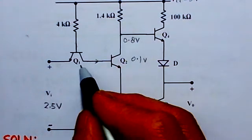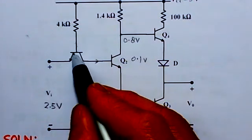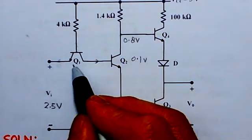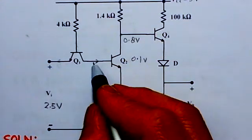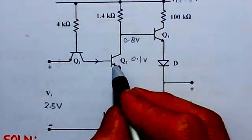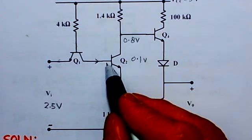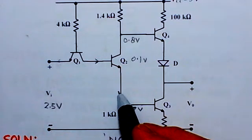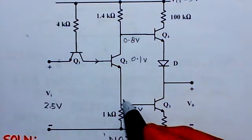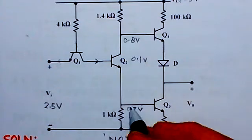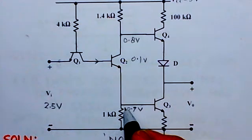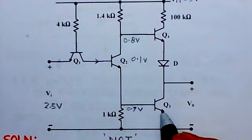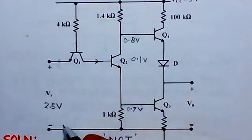So this is reverse active mode and the current will flow in the opposite direction — the normal current flow is reversed. Since Q1 is in reverse active mode, the current flowing will saturate transistor Q2. So Q2 will go into saturation. The emitter current flowing through Q2 will also saturate transistor Q3.